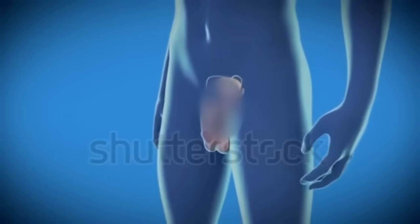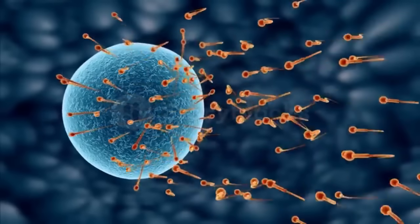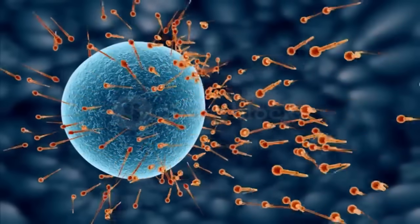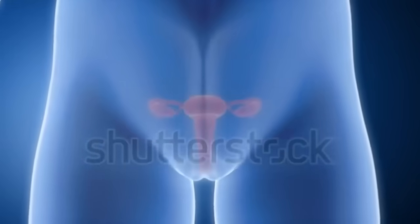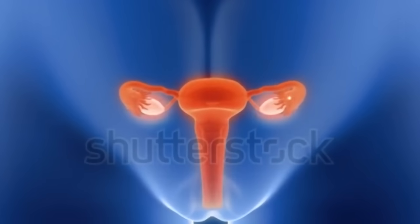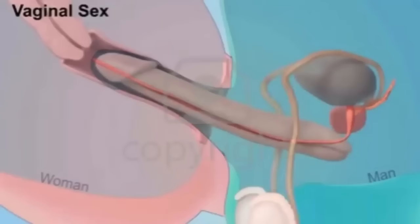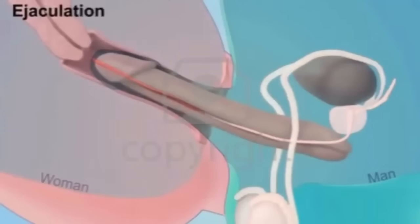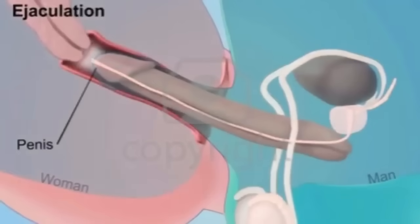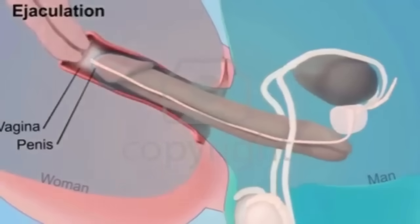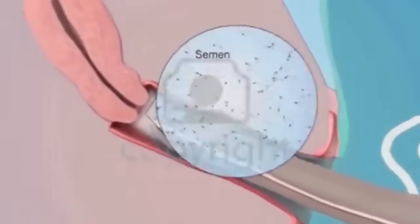Human reproductive system. The human reproductive system includes the male reproductive system, which functions to produce and deposit sperm, and the female reproductive system, which functions to produce egg cells and to protect and nourish the fetus until birth. Human reproduction usually involves internal fertilization by sexual intercourse, in which the male inserts his penis into the female's vagina and ejaculates semen which contains sperm.